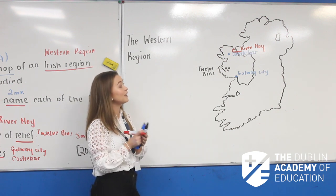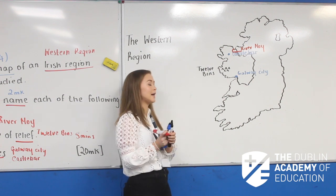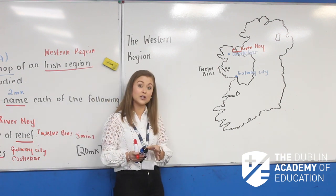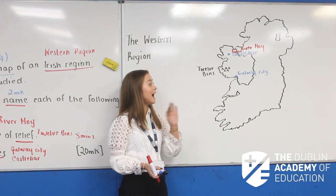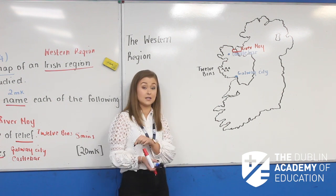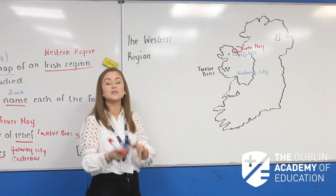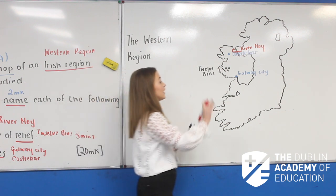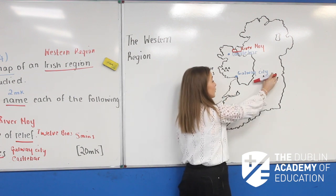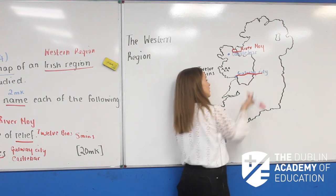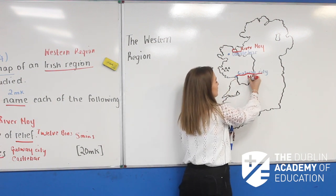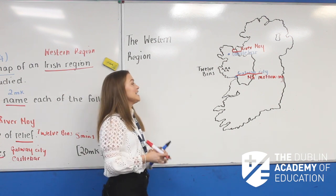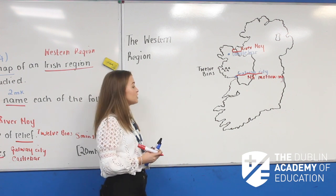The last thing I mentioned, which is in your sample question, is a communication link or a road or railway. Now this has never been asked for an Irish region, but it has been asked for your European region Part A and also in your continental/subcontinental question. So this is just a safety net for you all — because if it's been asked in European and in continental/subcontinental, it's going to be asked in your Irish region at some point. From Galway I'm going to draw in my motorway from Galway to Dublin — we have the M6 motorway, which travels towards Dublin in the GDA, as my communication link.